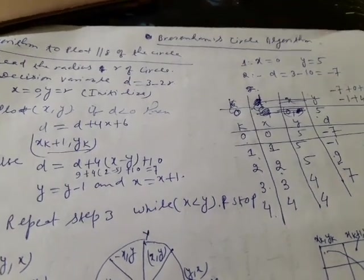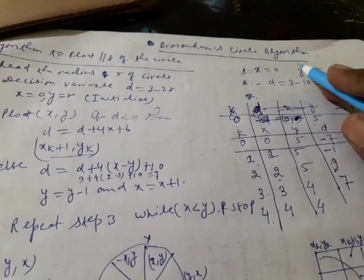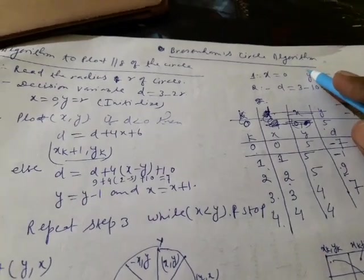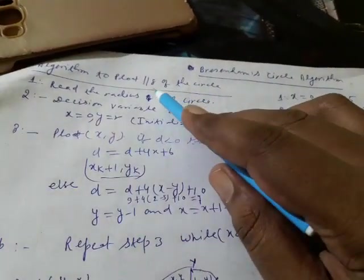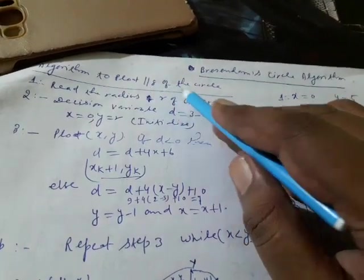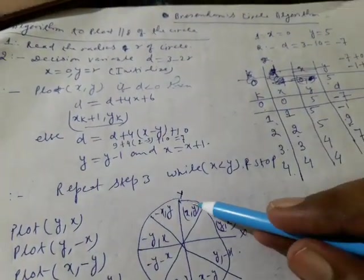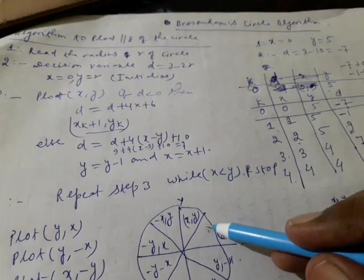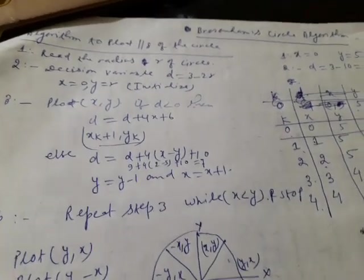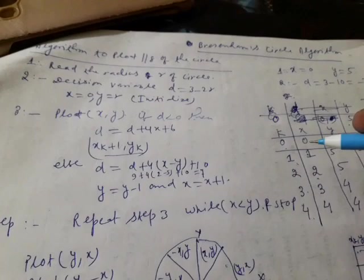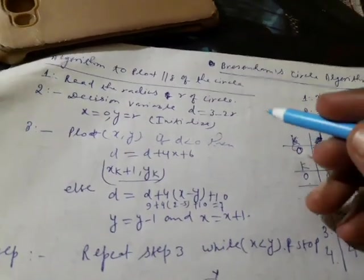In this video we are going to learn Bresenham's circle drawing algorithm. This algorithm is applicable for the 1/8 of the circle, meaning only one portion of the circle. If we go for all portions, we can learn how to do it.